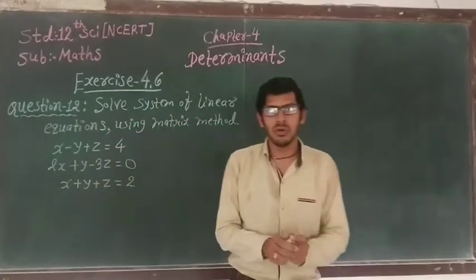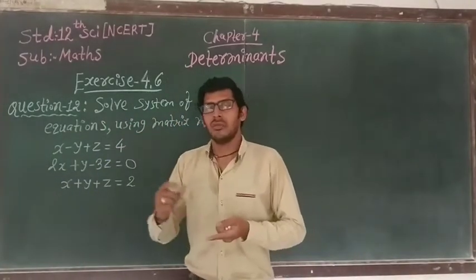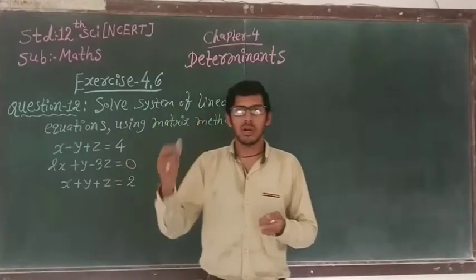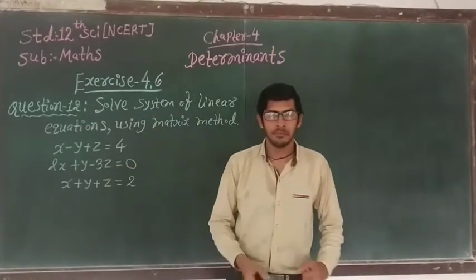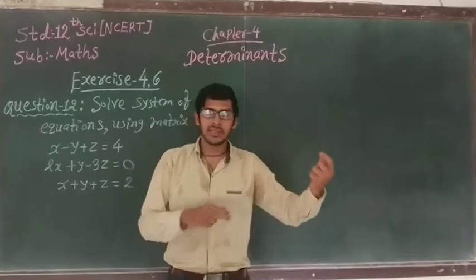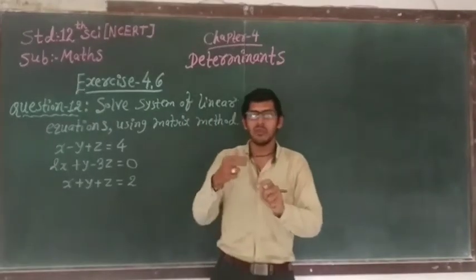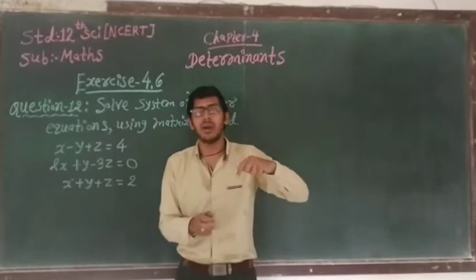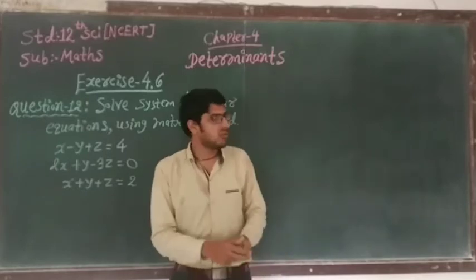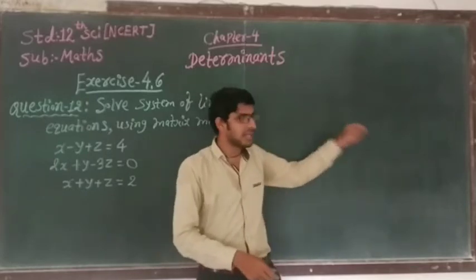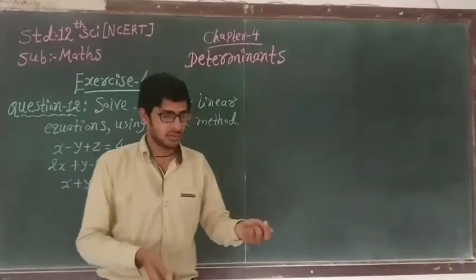So we have to follow some steps. Step 1: first of all we have to convert into matrix form. Second, we have to write AX equals B and then write X equals A inverse B. Then we have to find out A inverse. After finding A inverse, we have to multiply with B and it gives our final answer.